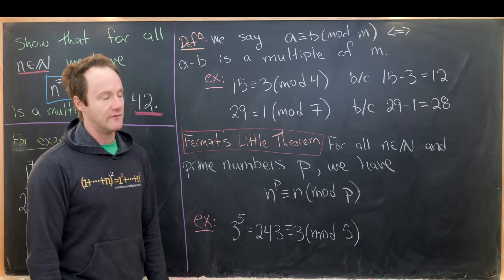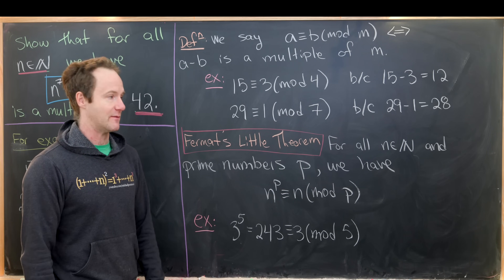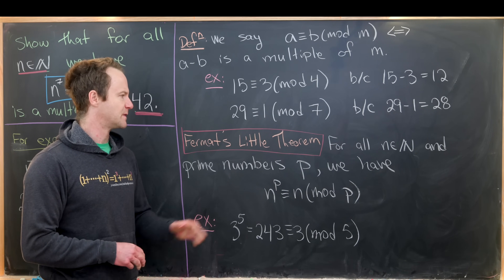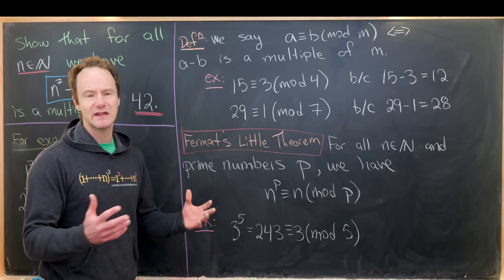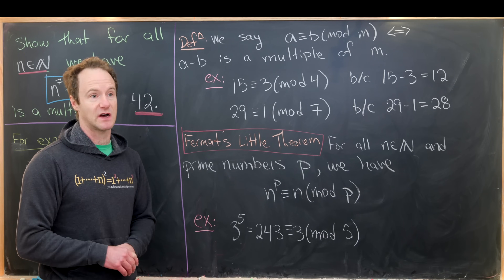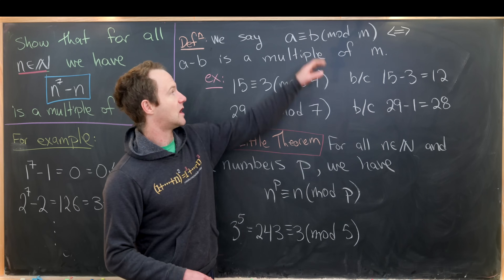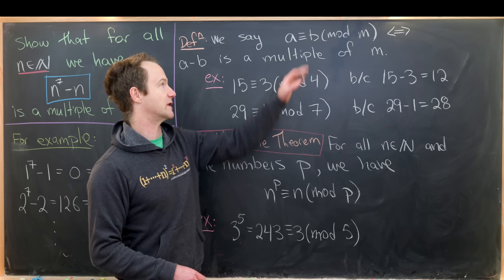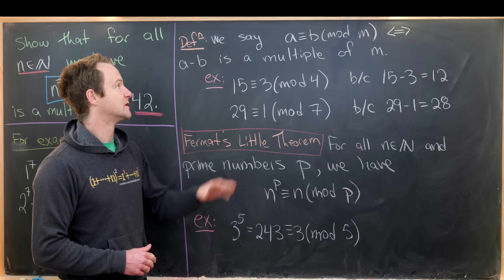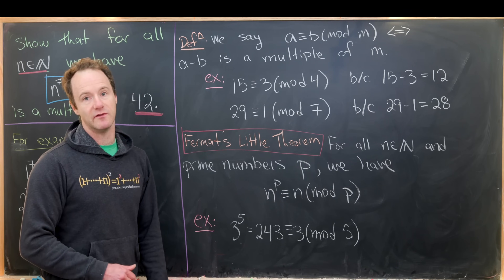We're going to use the power of equivalence modulo m, where m is some natural number — in particular a prime, as we'll see — in order to solve this along with a very beautiful result known as Fermat's Little Theorem. We say that a is congruent to b mod m, where a and b are integers and m is a natural number, if and only if a minus b is a multiple of m.